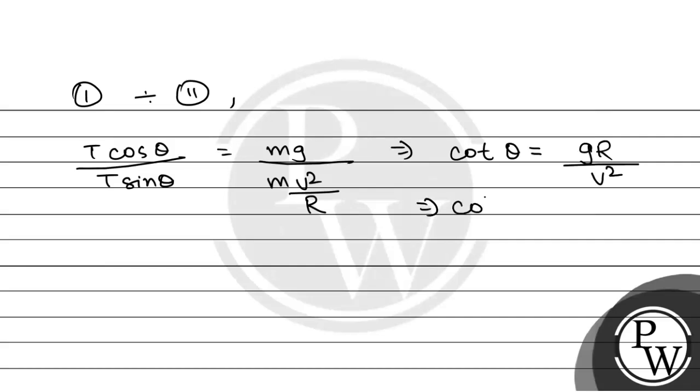So we will have cot theta is equal to g is 10 meters per second squared, r is 40 meters, and v squared will be 20 squared. So that will be cot theta will be equal to 400 by 400, that is 1. So theta will be equal to 45 degrees.